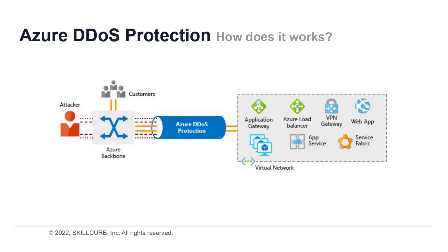DDoS protection uses the scale and elasticity of Microsoft's global network to bring DDoS mitigation capacity to every Azure region. The DDoS protection service helps protect your Azure applications by analyzing and discarding DDoS traffic at the Azure network edge before it can affect your service's availability.